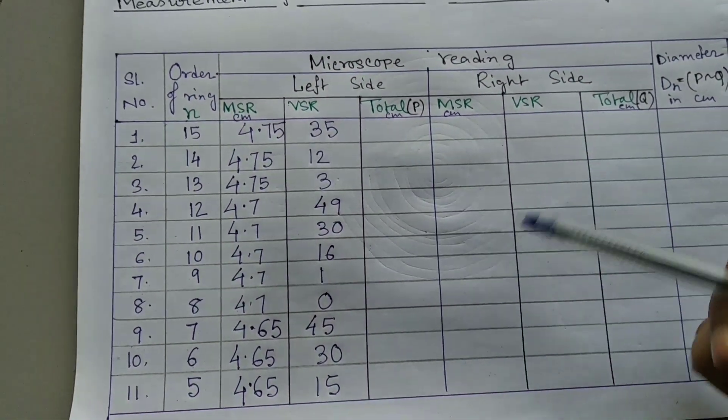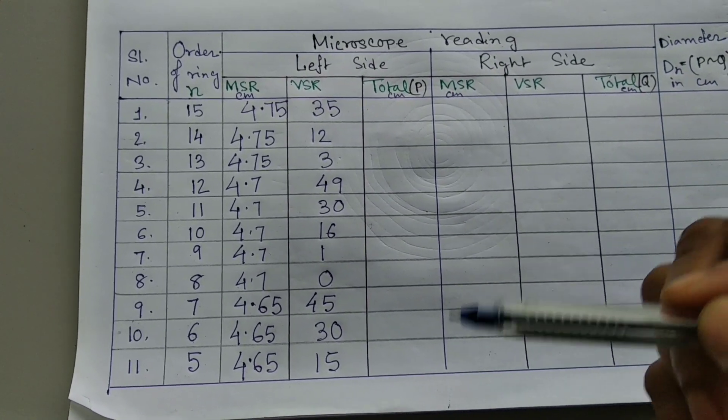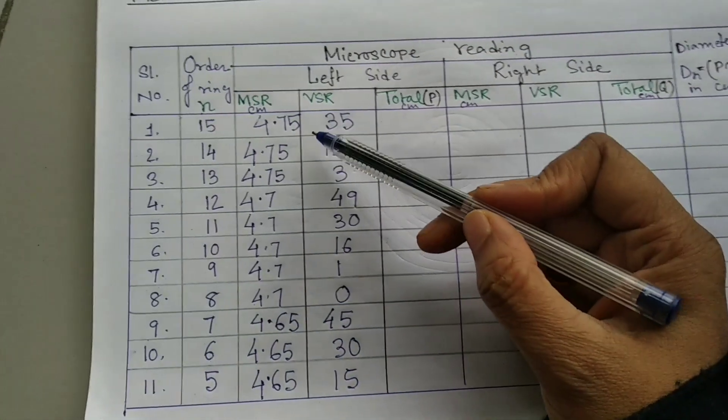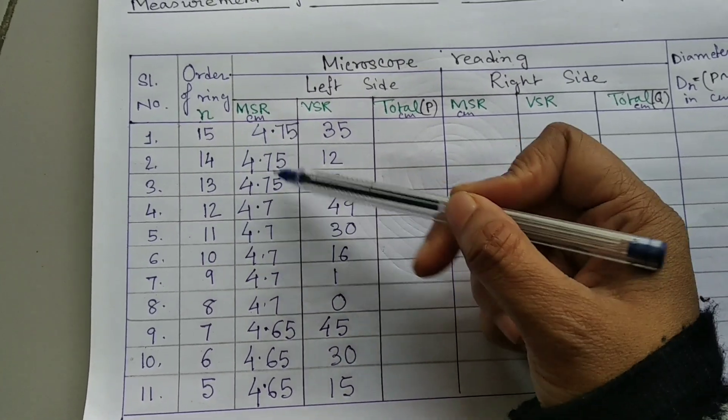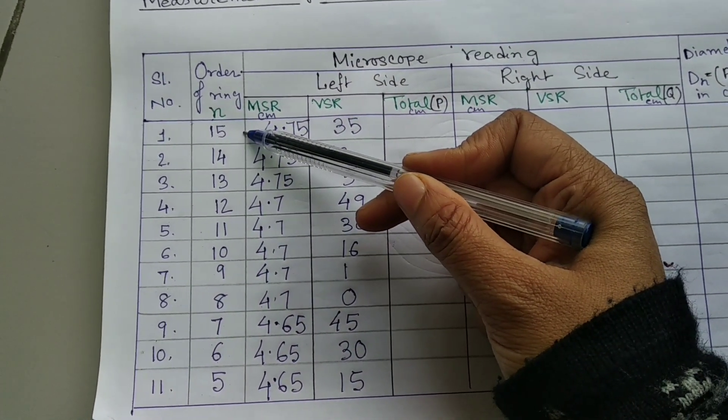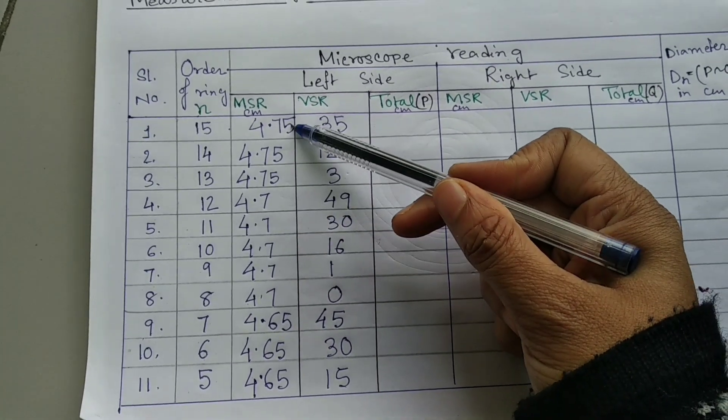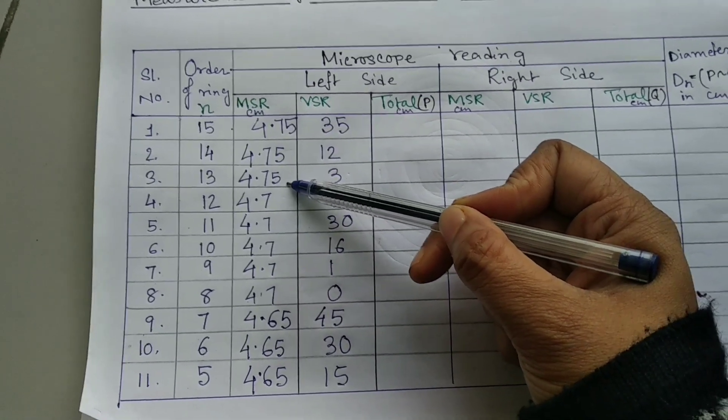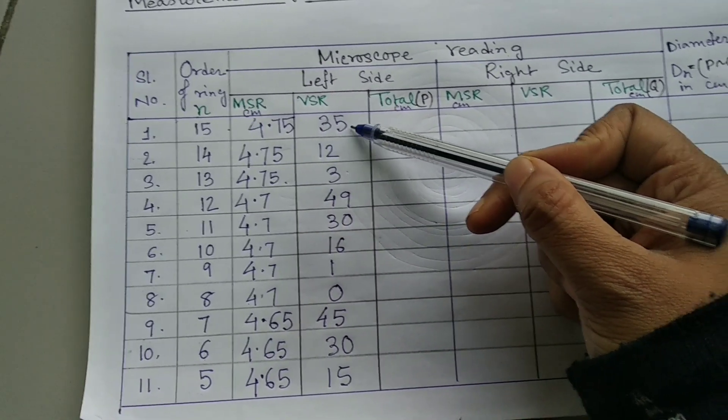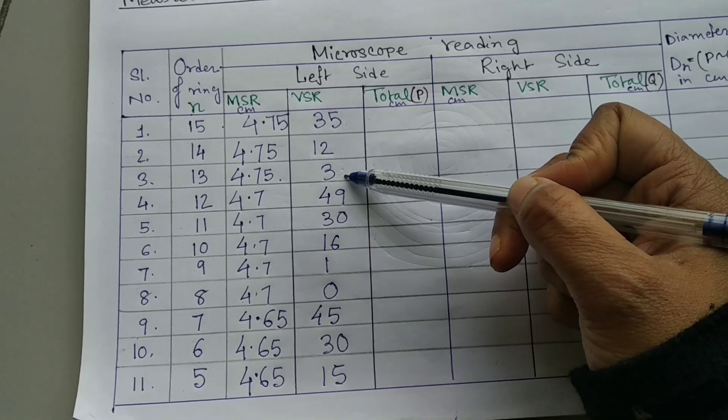We can see that since the fringes are very nearer to each other. So, we can observe that 15th number of rings to 13th number of rings, there is no change in between main scale reading. But we can find change in vernier scale reading.